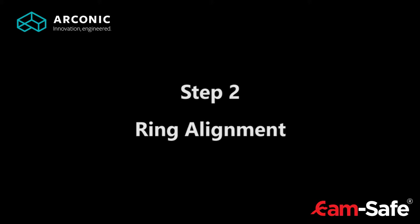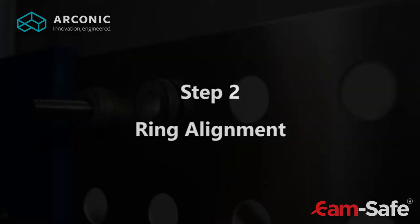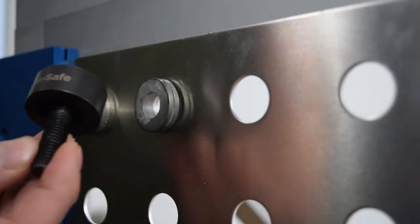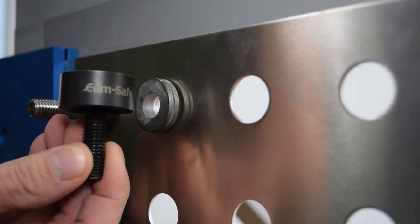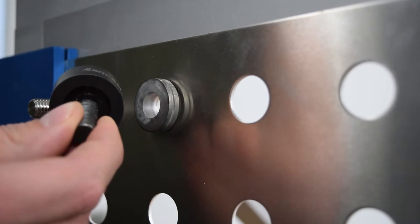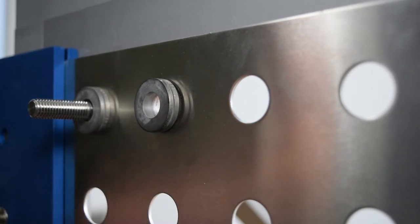Step 2: Ring alignment. The alignment bolt is placed on the contact ring from behind.